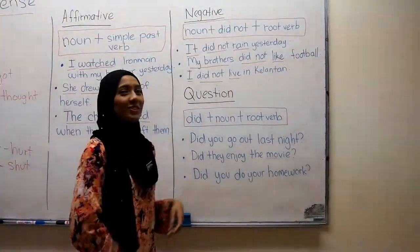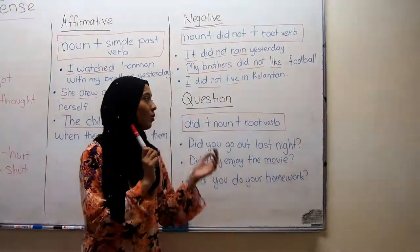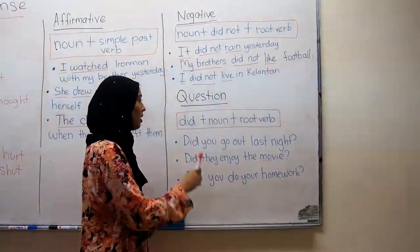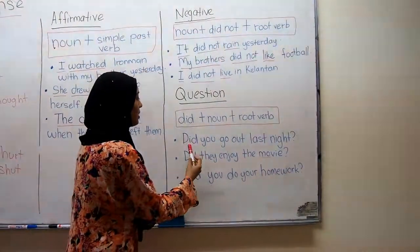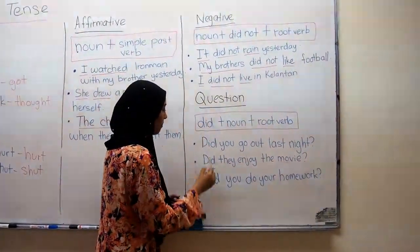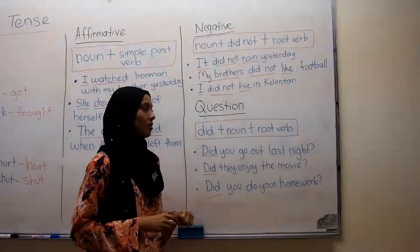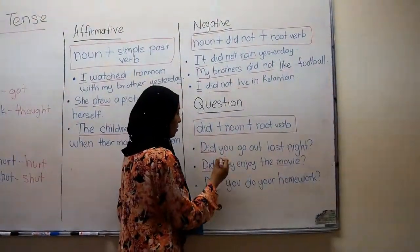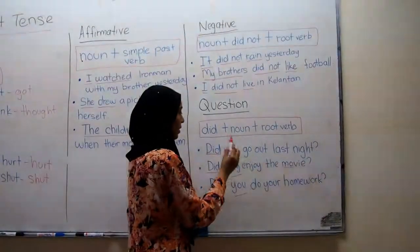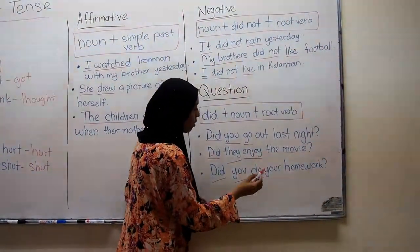The third structure is the question form. To write a simple past tense question, you start with 'did,' followed by the noun and then the root verb. For example: Did you go out last night? Did they enjoy the movie? Did you do your homework? You can see that did, did, did — they all start with 'did,' followed by the noun — you, they, you — and then the root verb.